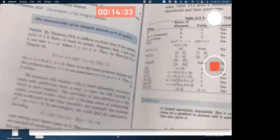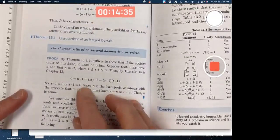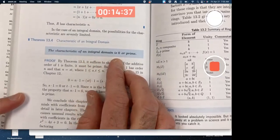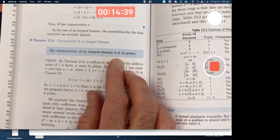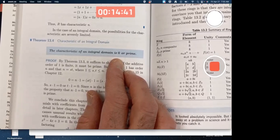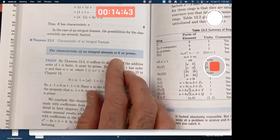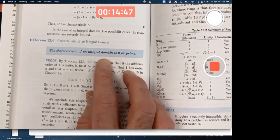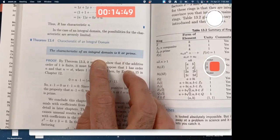Another theorem is that the characteristic of an integral domain is either 0 or prime. If you know you've got an integral domain and you happen to be wondering what its characteristic is, it's either 0 or it's prime. No other possibilities. This would apply to fields, too, because fields are integral domains.